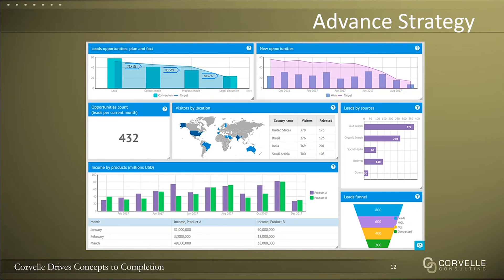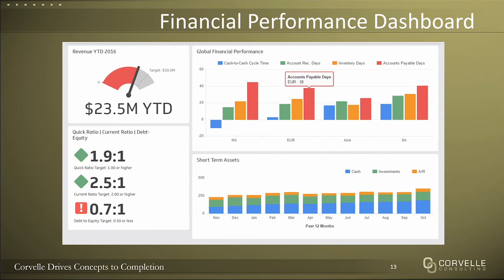To advance strategy, data analytics helps you evaluate how well you're advancing your business strategy. The goal is typically to figure out how to acquire more customers, build market share, and understand where you're falling down in customer service so you can improve. The financial performance dashboard shows what's happening in terms of cash, accounts receivable, inventory turns, typical financial ratios, how your assets are hopefully growing over time, and a single key metric — in this case revenue — and how well you're trending on that.